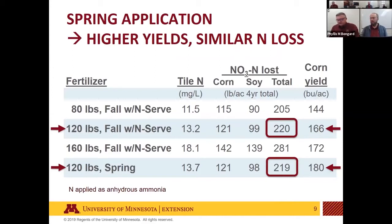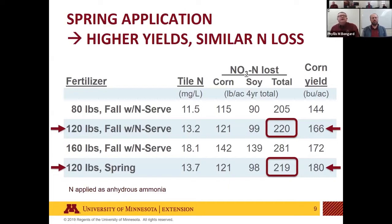Research data from Waseca shows that fall application with N-Serve lost basically the same amount of nitrogen as spring application over four-year totals. However, there was a significant yield increase when nitrogen was applied in spring versus fall. Since nitrogen didn't go off through tile lines, it's clear denitrification was occurring in the soil. Even on tile-drained soil, nitrogen was still lost — indicating that on heavier clay-textured soils, microsite denitrification can account for meaningful losses.